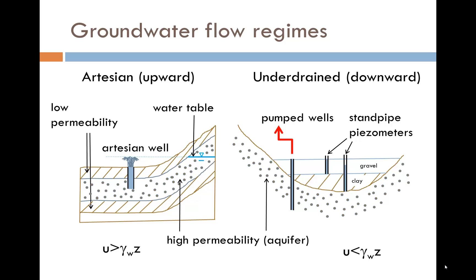A schematic of under-drain conditions is shown on the right. Water was pumped for centuries from the clay at great depths below London to provide water for the city. As a result, the pore water pressure as measured by the standpipe piezometer in the clay layer will register a water pressure u which is less than gamma w times z.